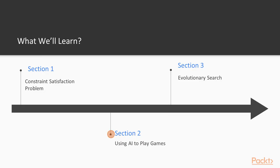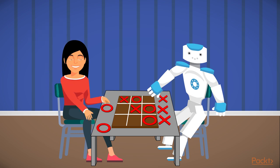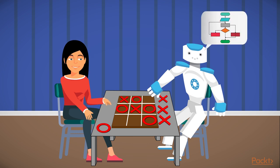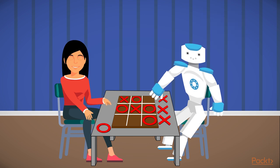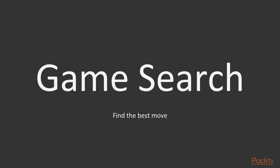In section 2, we will learn about game search while developing a game which allows humans to play against the algorithm we develop. In this section, we will be developing an algorithm to play tic-tac-toe. First, we will understand the basics of the game, then we will realize that the aim of game search is to find the best move.